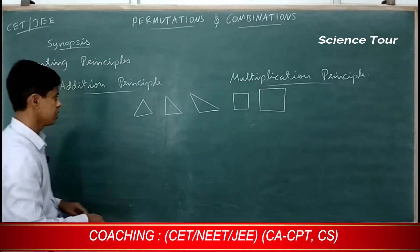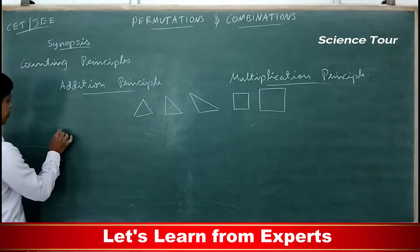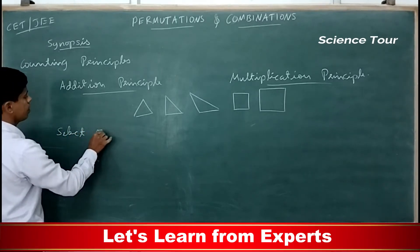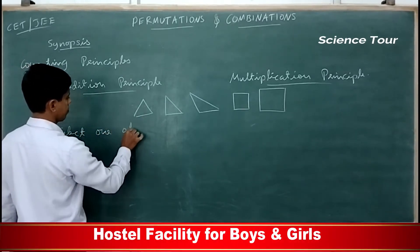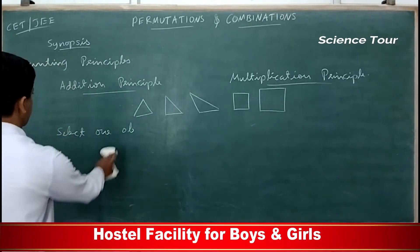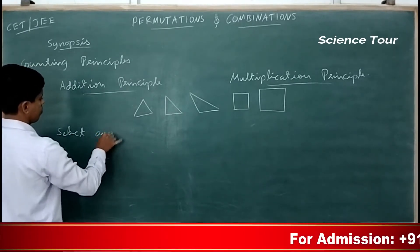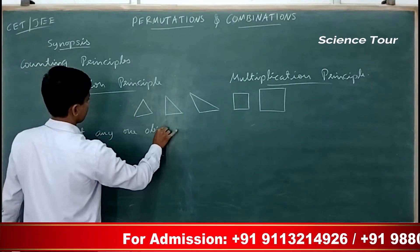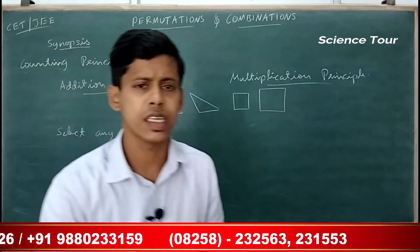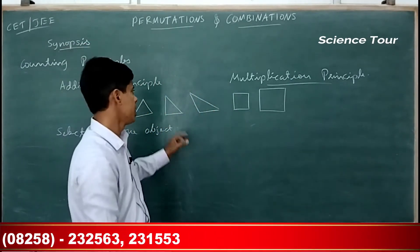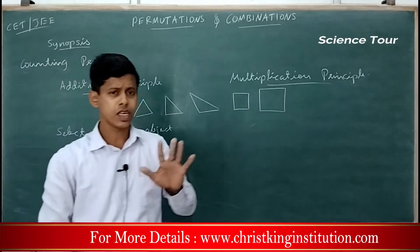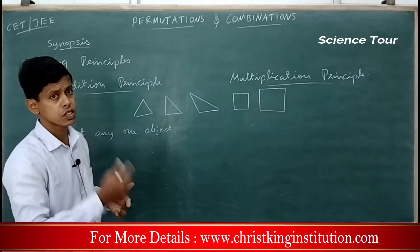Now you are asked to select or take one object. You are asked to select any one object. They have not specified that you have to take a right angle triangle or the smaller square — nothing like that. You can take any object, and in how many ways can you do that?